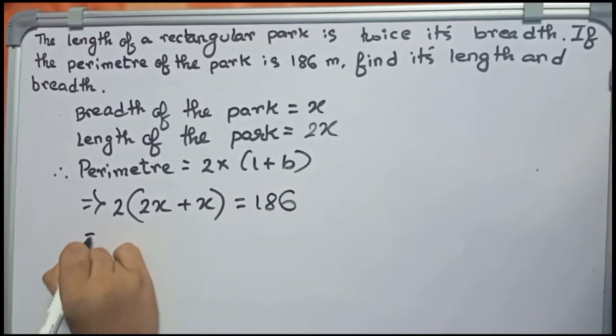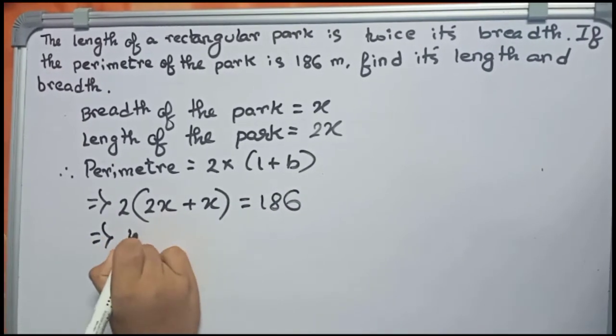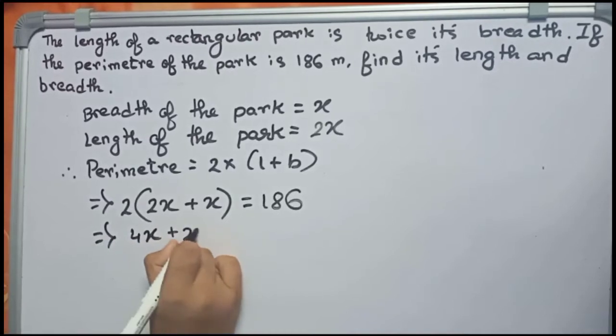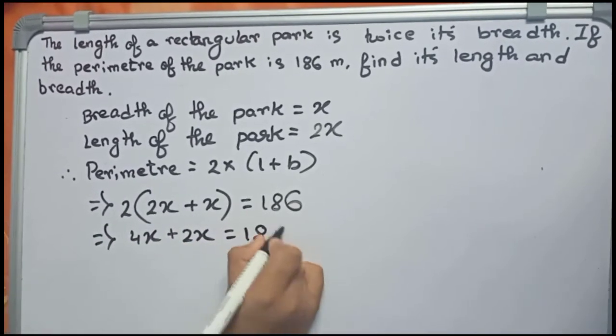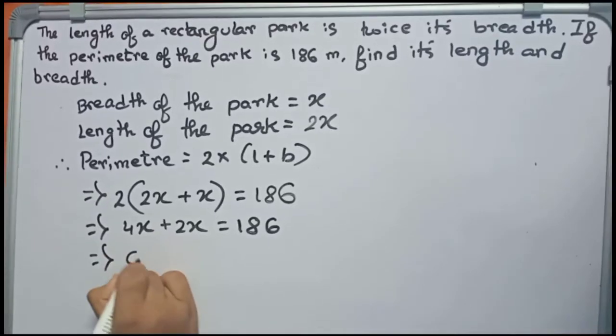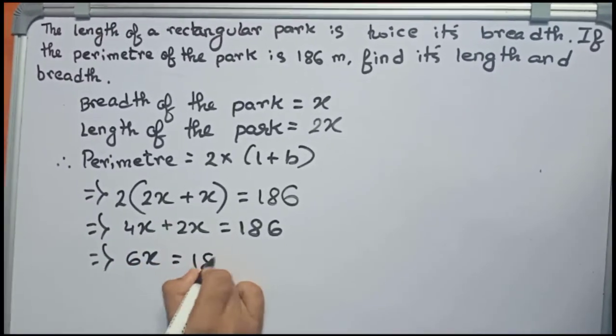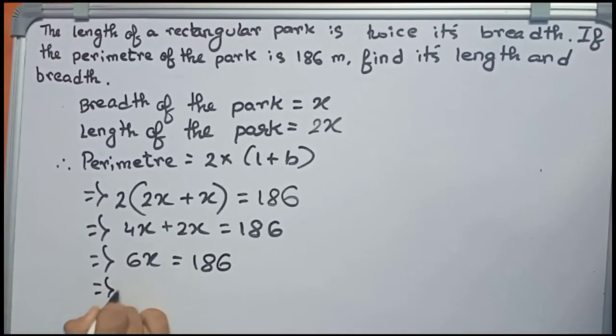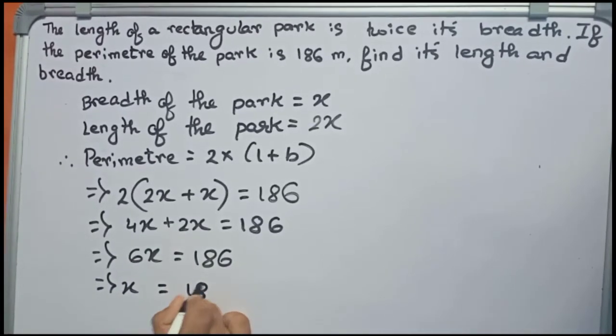Now I solve it. It will become 2 twos are 4x plus 2x equals to 186, or 6x equals to 186, or x equals to 186 by 6.